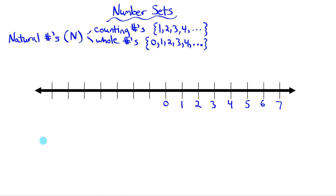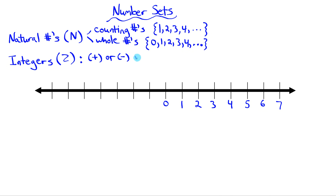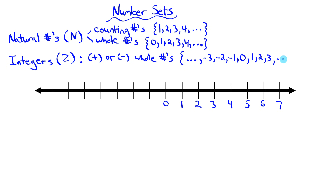Now what if we include some negative whole numbers on our number scale? That would introduce the number set called integers. The symbol for integers is a Z. Integers are positive or negative whole numbers, so that set would look something like negative 3, negative 2, negative 1, 0, 1, 2, 3, and so on. It's important to note that zero is included in the set of integers. Let me label some of the negative whole numbers on my number line so that we have integer values from negative 7 to 7.